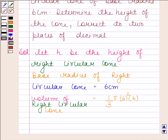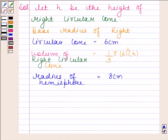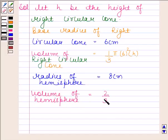We are also given that radius of hemisphere is 8 centimeters. So volume of hemisphere is 2/3 π (8)³.